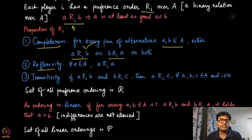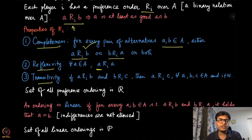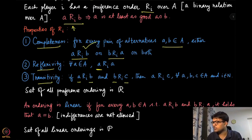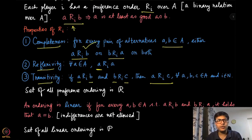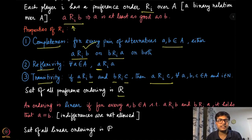The second property is reflexivity, which says A is at least as good as A — you prefer A at least as much as A itself. The third property is transitivity: if you prefer A at least as much as B, and B at least as much as C, then it is natural to assume you prefer A at least as much as C. These three properties we will always assume. The set of all preference orderings, strict or weak, we put in the set script R.